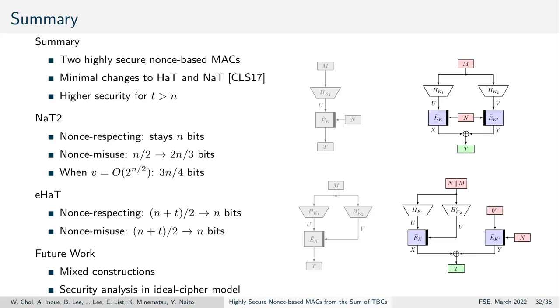NAT2 improves it from n/2 to 2n/3 bits and even to 3n/4 bits if not too many verification queries are asked. Extended hash-as-tweak can extend the security from (n+t)/2 to n bits.